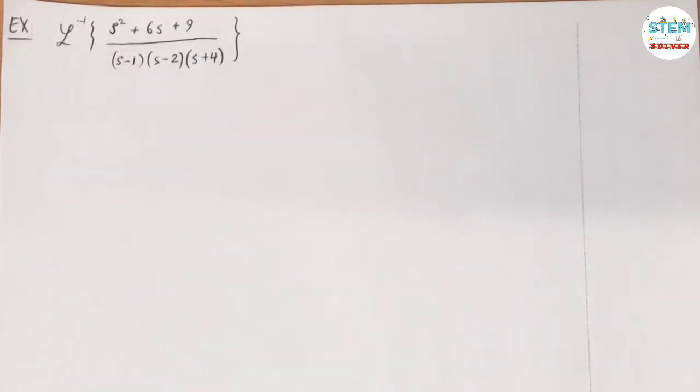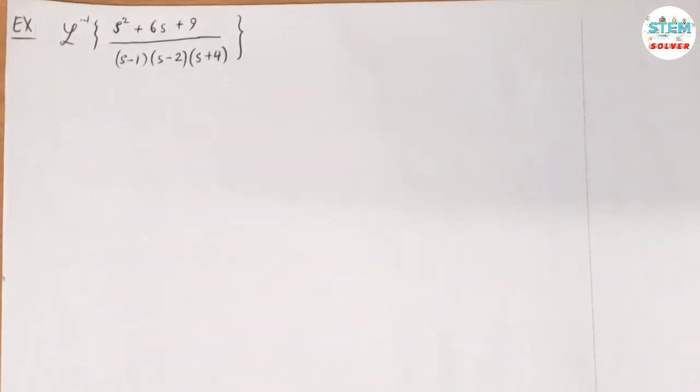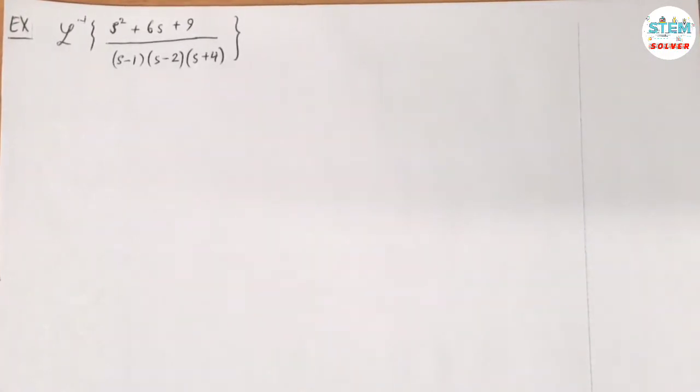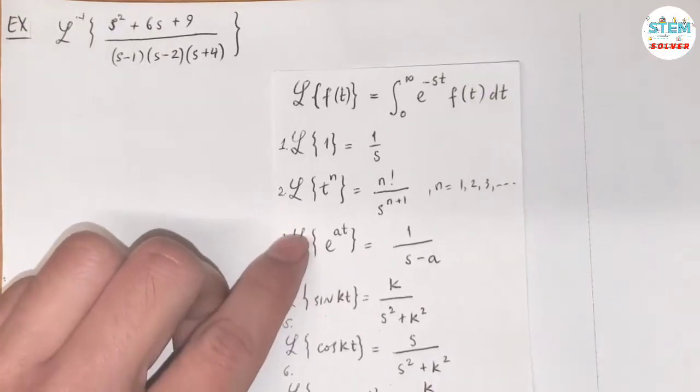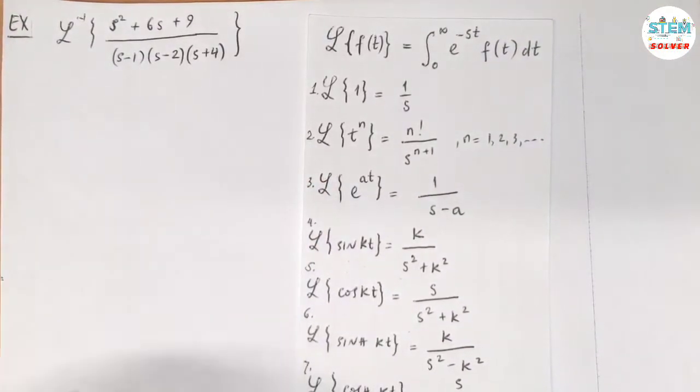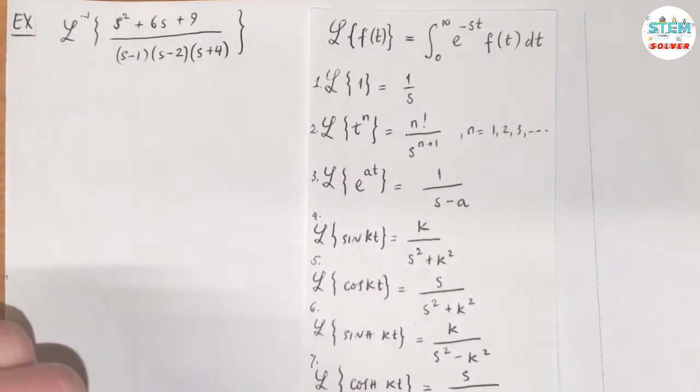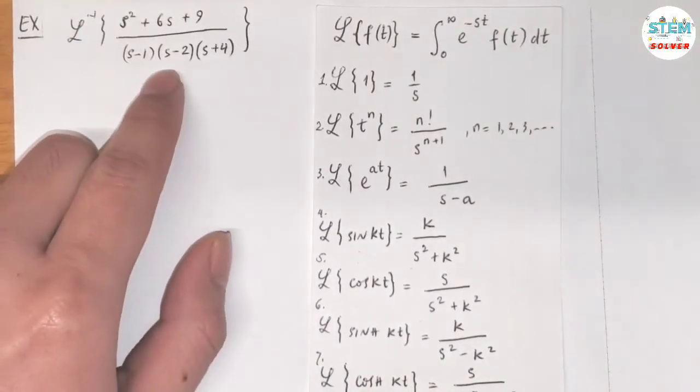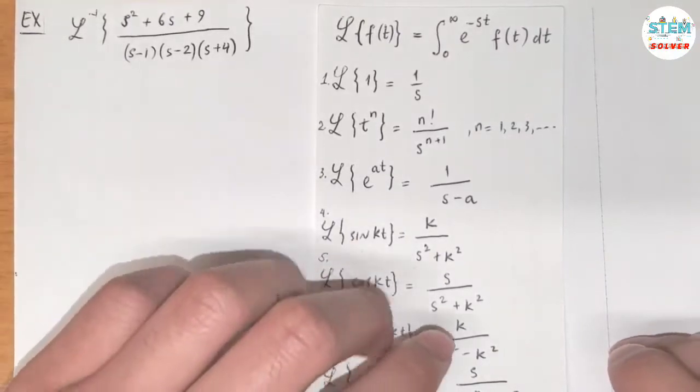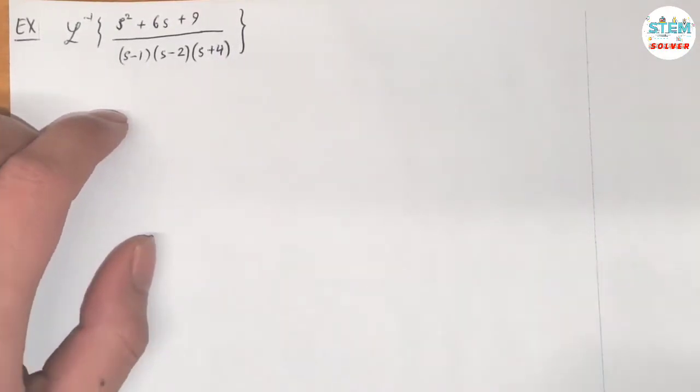First of all, looking at this, we cannot find the inverse transform of a product, and by looking at the table which I have here, there's nothing that matches the form I have here. So for this one, we need to rewrite this in form of addition or subtraction.